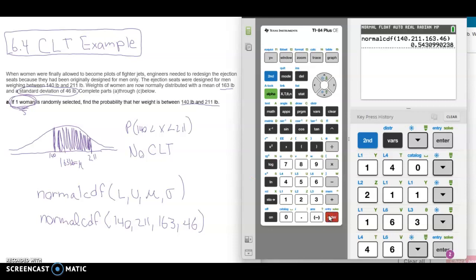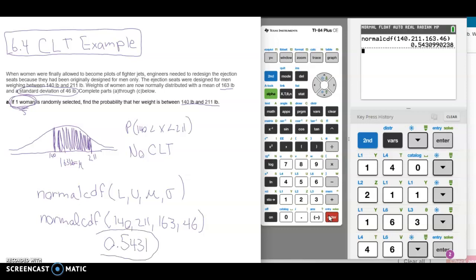And we get 0.5431, 0.5431 if we're going to four decimal places. And what that represents is the probability that an individual selected is between 140 and 211 pounds.